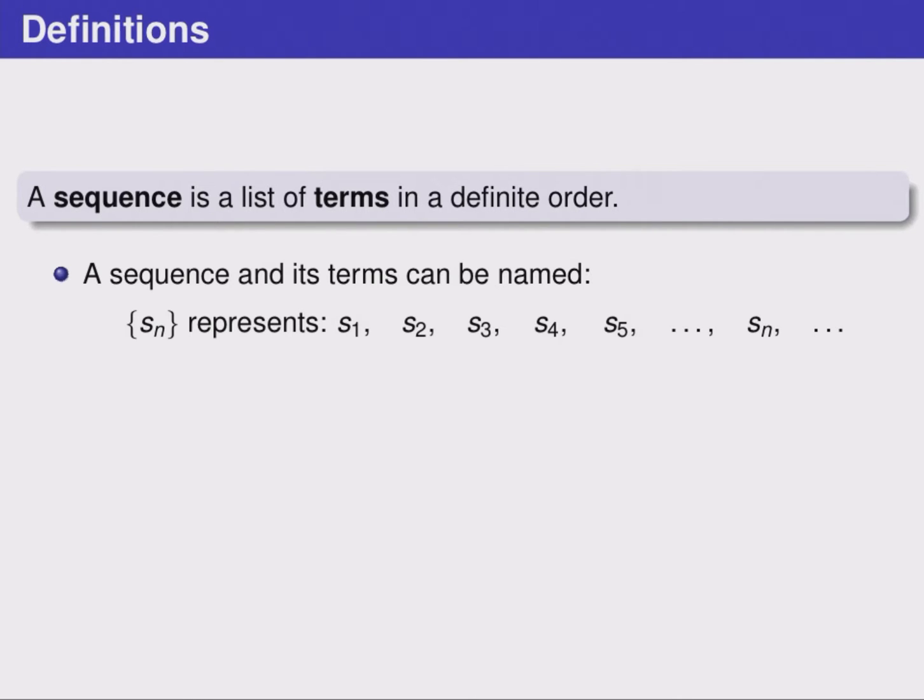If we want to talk about a generic term, especially if we know a pattern for it, we can talk about S sub n, the generic term or general term in a sequence. It's important to know the difference between the curly braces notation and the no curly braces notation. With curly braces, we're talking about the entire sequence and all numbers in it in order. Without curly braces, we're talking about a single term, just one number in the sequence, and we can do any sort of algebraic operations we would like to for that.